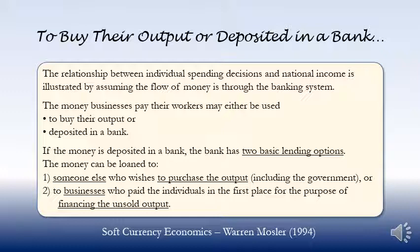If the money is deposited in a bank, the bank has two basic lending options. The money can be loaned to someone else who wishes to purchase the output, including the government, or to businesses who paid the individuals in the first place for the purpose of financing the unsold output.